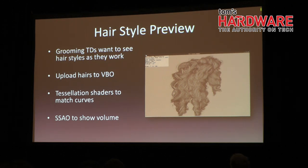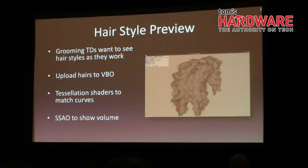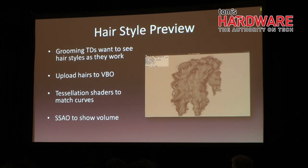In terms of separation of hairs, hairs are lit as if they're cylinders to enhance shaping in the hairstyle and distinguish individual hairs from one another. And finally, to show the volume of the hair, we use screen space ambient occlusion, or SSAO, which darkens corners which receive less light than flat surfaces. Without SSAO, it's really hard to see volumes in the hair. Particularly, if you have a strand of hair that's in front of the rest of the hair volume, it's very difficult to tell which hairs are in front of one another.